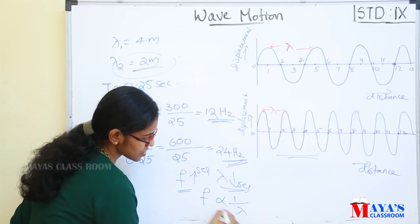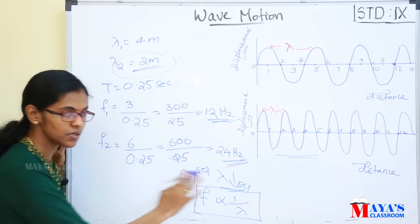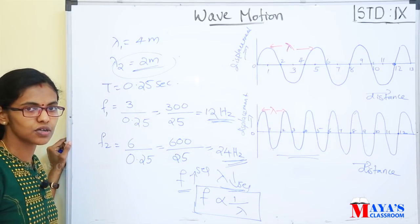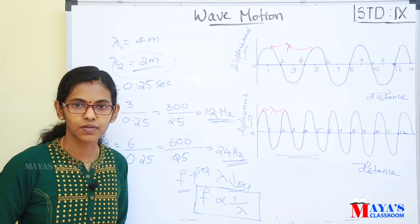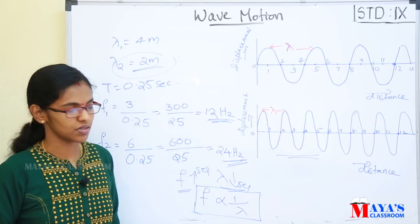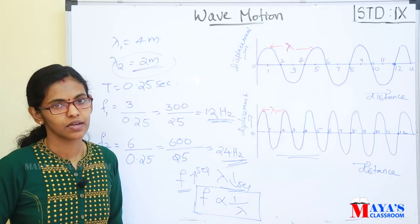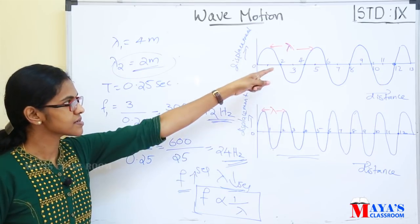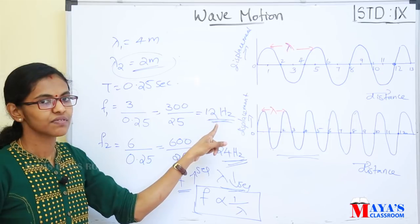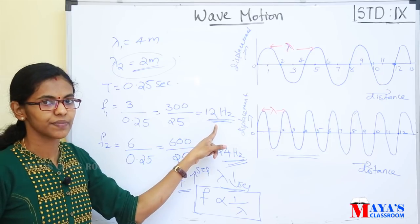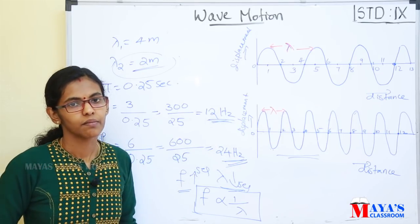Frequency and wavelength are inversely proportional. That is, when wavelength increases, frequency decreases. Frequency and wavelength are inversely proportional.